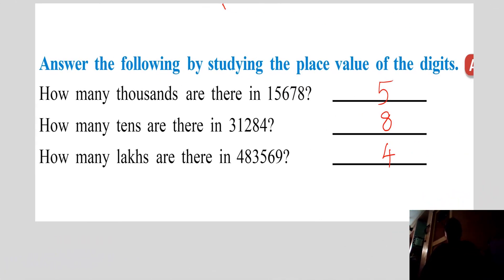The question is: how many thousands are there in 15,678? You have to find the place value of 5, and that is 5,000. Then, how many tens are there in 31,284? That is 8. And how many lakhs are there in 4,83,569? To find the place value of the digits, we place commas. So here, 4 is in the lakhs place.